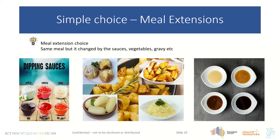Meal extension variety: serve the protein portion on a plate and present an array of vegetables for residents to choose from using tongs. Offer different dipping sauces for finger foods, or different gravies — a mustard sauce, pepper sauce, brown gravy, or chicken gravy — alongside the main protein. Very simple to ask residents what they'd like with their meal, with minimal impact on service time.